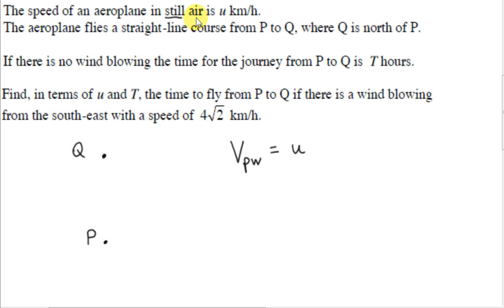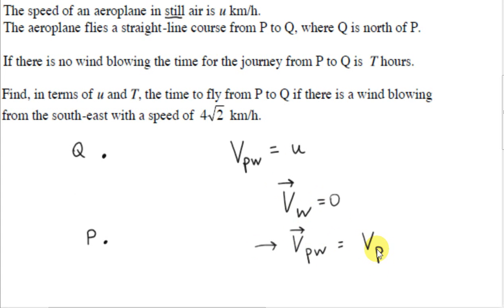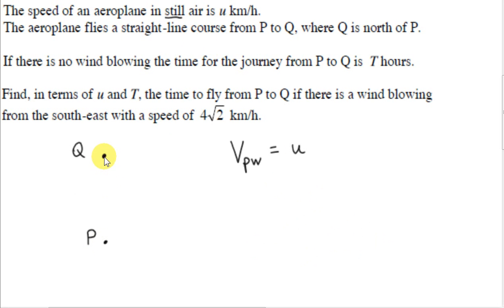If the air is still — in other words, if the velocity of the wind is zero — then the velocity of the plane relative to the wind will equal the absolute velocity of the plane; that is, the velocity of the plane relative to the fixed ground. The aeroplane flies a straight-line course from P to Q, where Q is north of P. If it flies a straight-line course from P to Q, that tells us that the absolute velocity of the plane V_P is entirely in the vertical direction — the positive J direction.